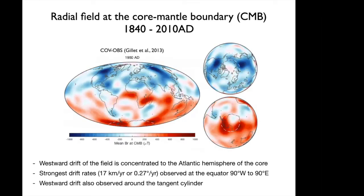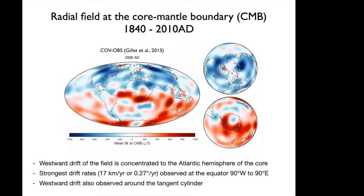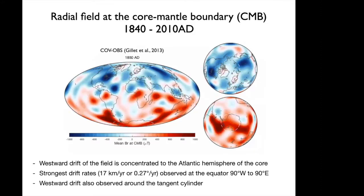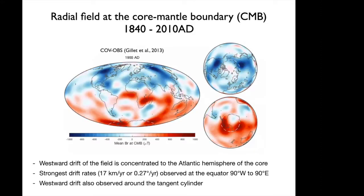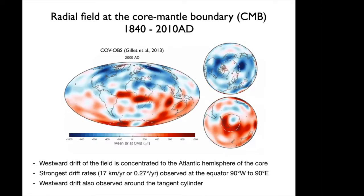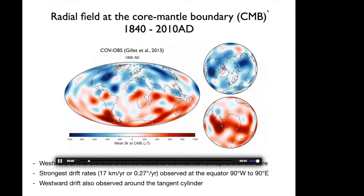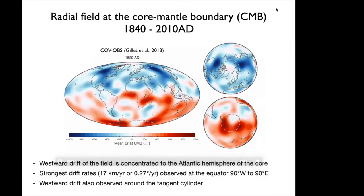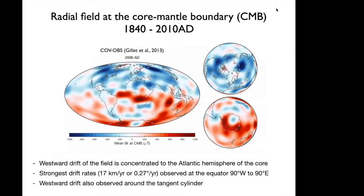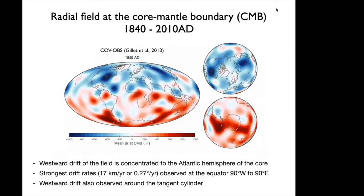Westward drift of the geomagnetic field has been a concept observed for a long time — the last four centuries we've known about this. It's not until the advent of models where we can look at the geomagnetic field at the core-mantle boundary that we've seen the westward drift is concentrated specifically in the Atlantic hemisphere, mostly at the equator, where we see strong flux patches moving westward at a rate of about 17 kilometers per year.